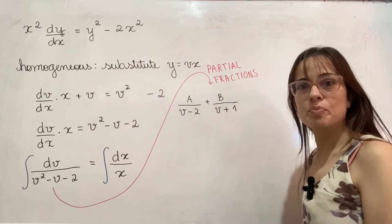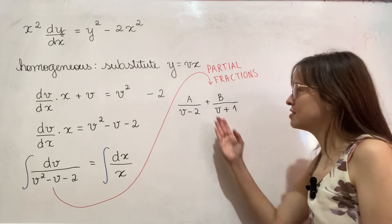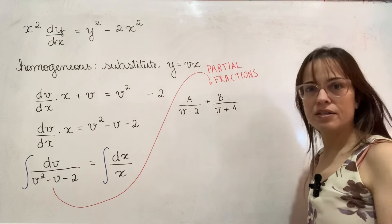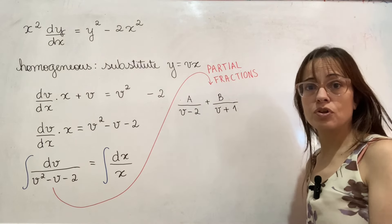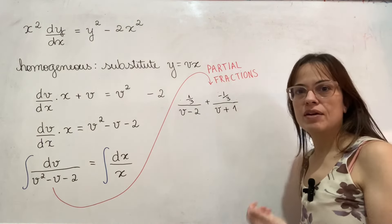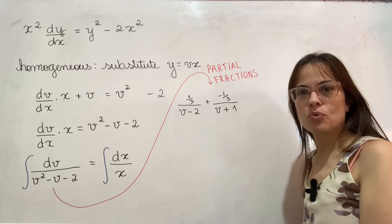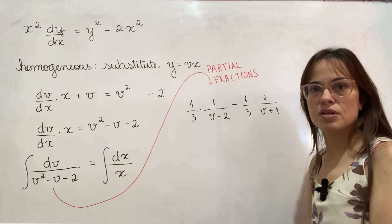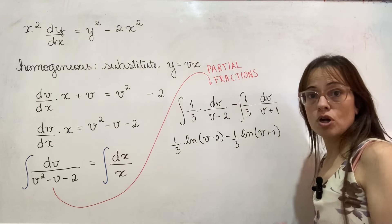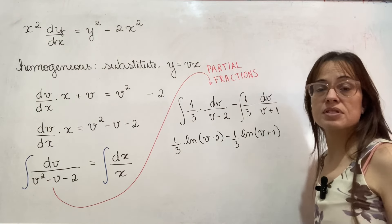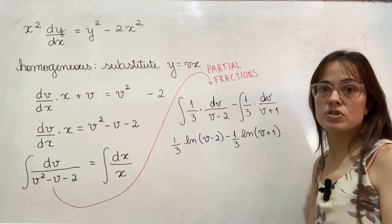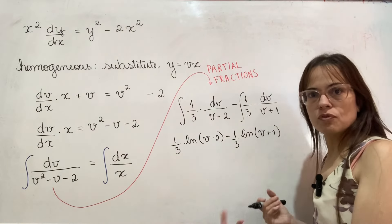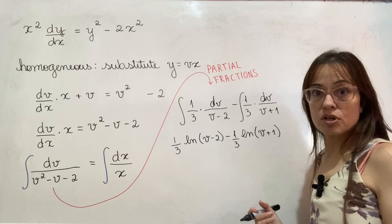Now let's integrate both sides. Again we have partial fractions — that seems to appear a lot. I've factored my denominator to identify the two fractions to add. Use your favorite technique to figure out the values of a and b. I've done mine and found they are one third and negative one third. So now I just have to integrate these terms, and I'm not putting the plus c here for the same reasons as the previous exercise.